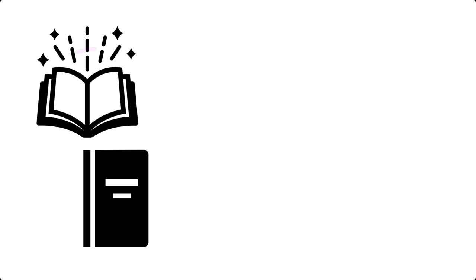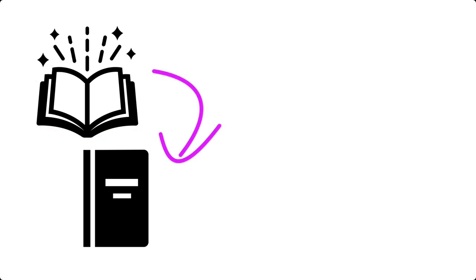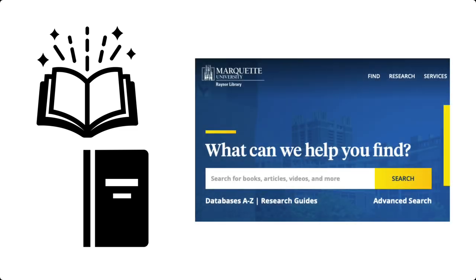Information about nursing theories can be found in books as well as in journal articles. Often you'll want to look in a book for the theoretical grounding behind the concept, and then look for journal articles to see how different researchers have applied that theory to different clinical situations. The library's homepage provides links to resources to help you find this information. By the end of this video, you will be able to locate information on nursing theories using the library's catalog and online databases.